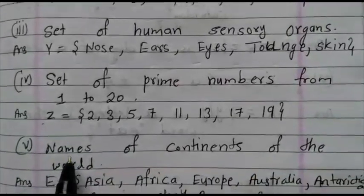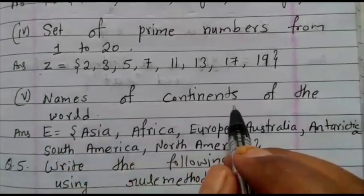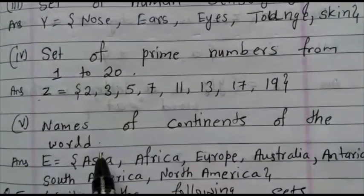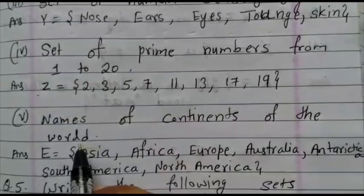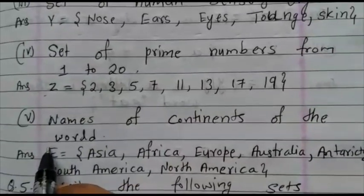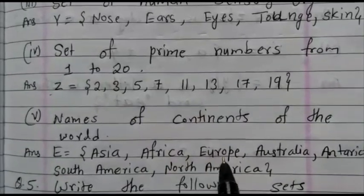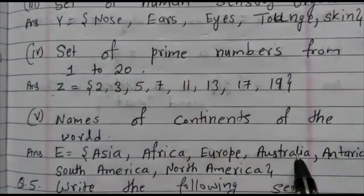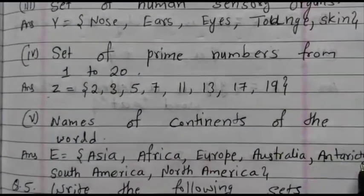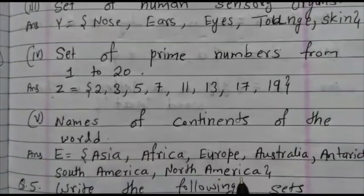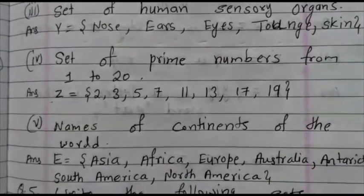Next, what is the given name of the continents of the world? You know in geography you studied continents of the world. How to write? E equals Asia, Africa, comma, Europe, comma, Australia, comma, Antarctica, comma, South America, and North America.